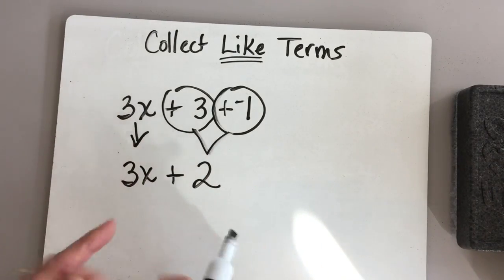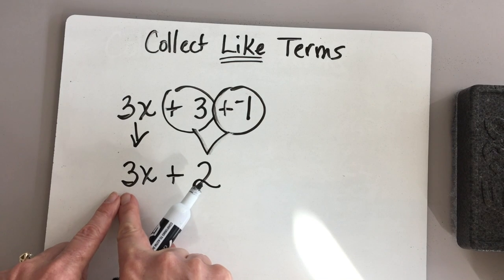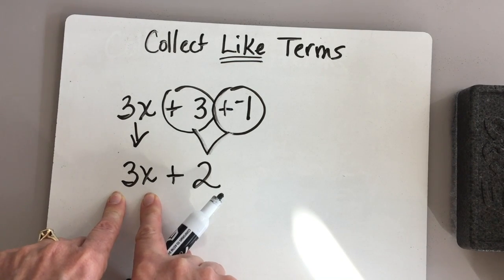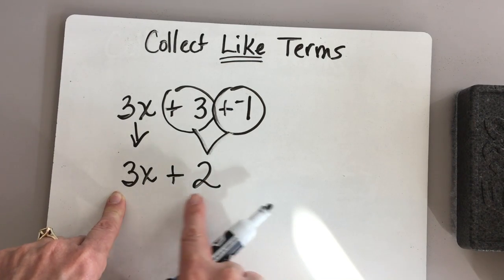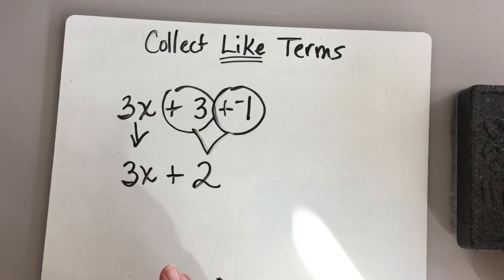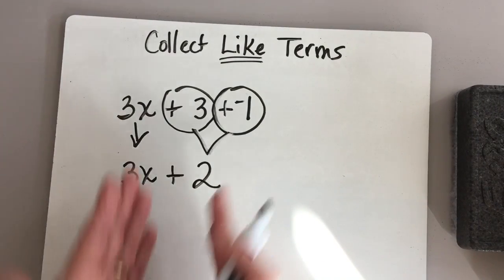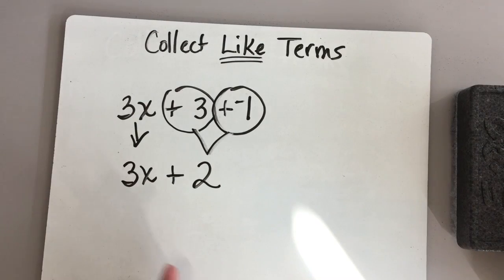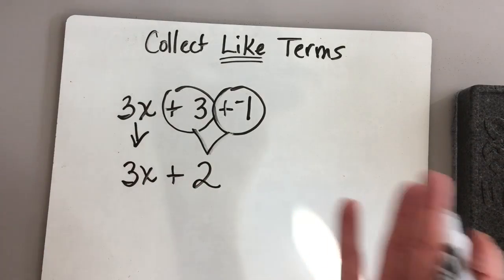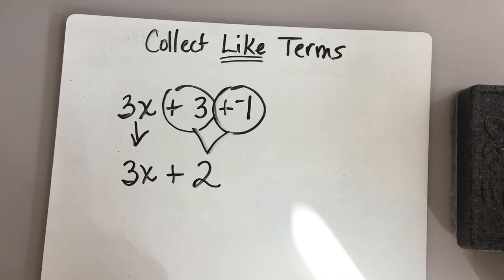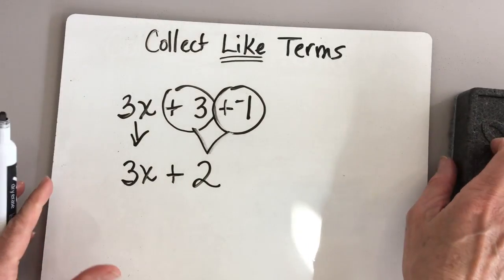This is in its simplest form — we can't combine it anymore because this means 3 times x, our variable. We don't know what that is, and then plus 2. So that would be in simplest terms. We collected and combined what we could. There were no x's to combine, so that is our simplified expression.